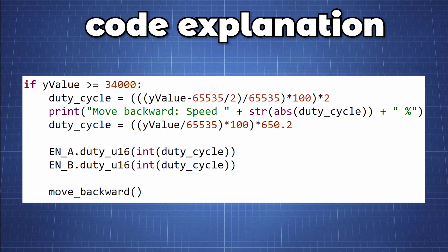If we push the joystick all the way backward we will receive a value of 65,535 and all the way forward we will receive 400. Using this information we create an if statement to test if the y value is greater than 34,000. If this is true we will convert the value we receive into a duty cycle that we will send to both enable A and B which will then move backward with a certain speed depending on how far the joystick has been pressed.